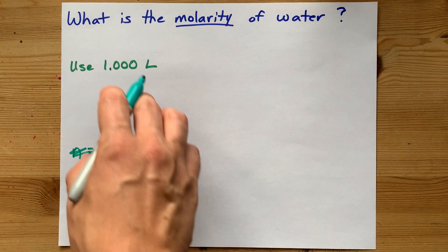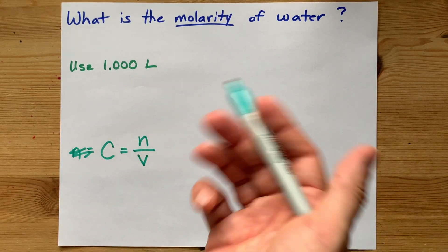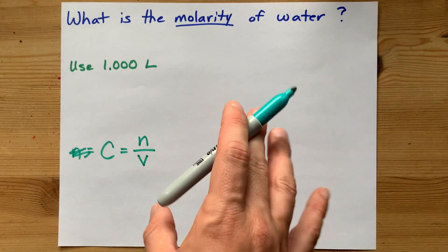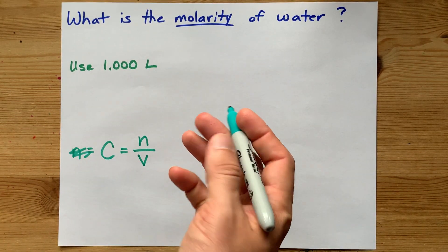then you can pick any volume you want really. And as long as you know how much it weighs in grams, you can convert that to moles using molar mass. If you start with, say, one liter of water,